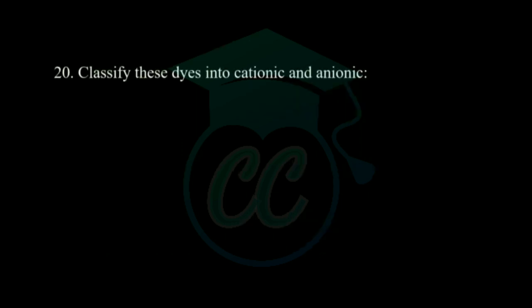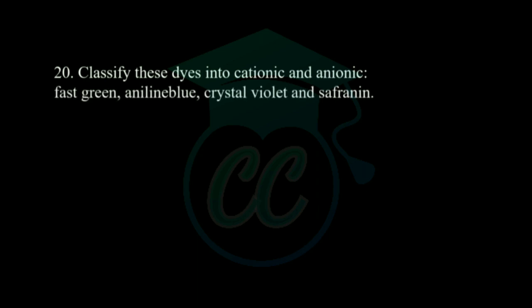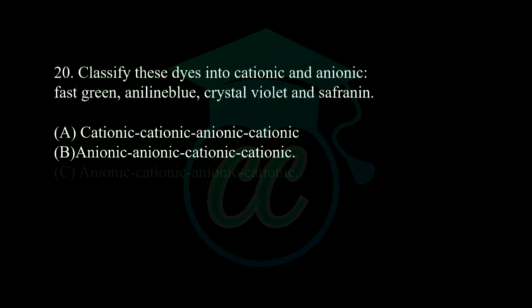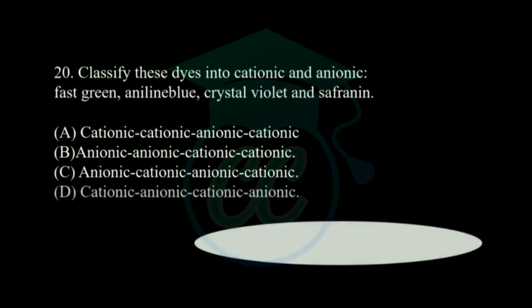Next question: classify these dyes into cationic and anionic. The dyes are: fast green, aniline blue, crystal violet, and safranin. Fast green is anionic, aniline blue is anionic, crystal violet is cationic, and safranin is cationic. The correct answer is option B: anionic, anionic, cationic, cationic.